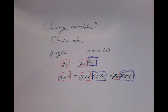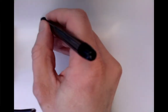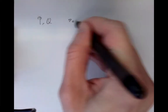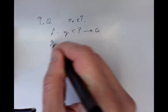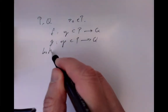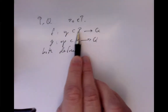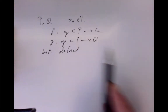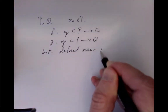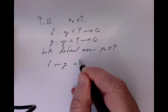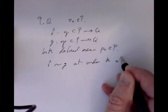Let's make an abstract theory of derivatives and changes of variables. Suppose P and Q are manifolds, and we pick a point P₀ in P. If we have maps F and G, each taking some open subset of P to Q, both defined near the point P₀ in P, then I want to say that F is equivalent to G at order K at P₀.